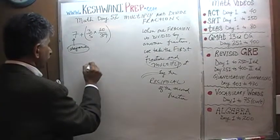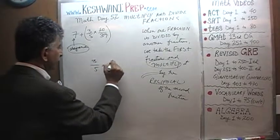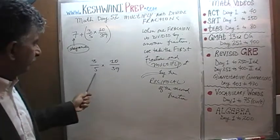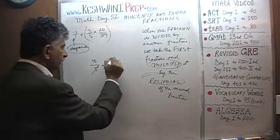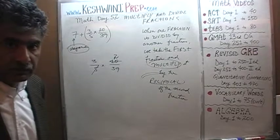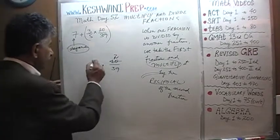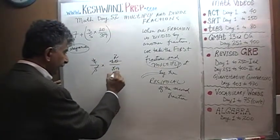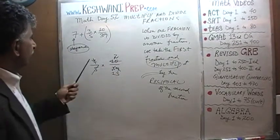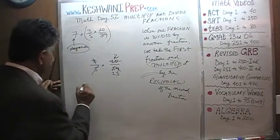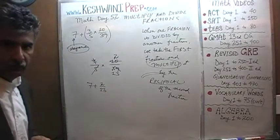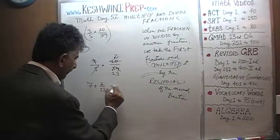Let's just focus on 3/5 times 10/39. We see 10 at the top and 5 at the bottom, so divide top and bottom by 5 — 5 drops out and 10 becomes 2. We see 3 on the top and 39 at the bottom; 39 is divisible by 3, so divide top and bottom by 3 — 3 drops out and 39 becomes 13. So this part equals 2 over 13. We end up with 7 plus 2 over 13.